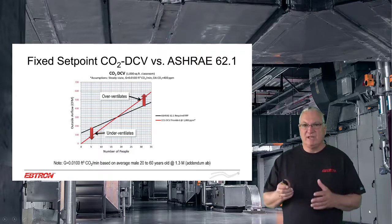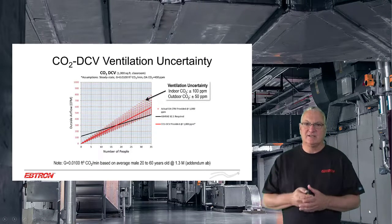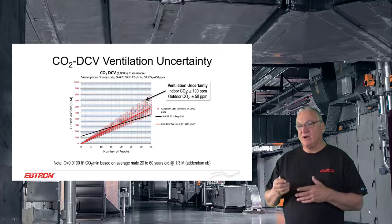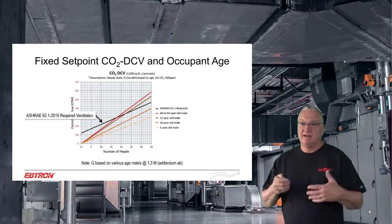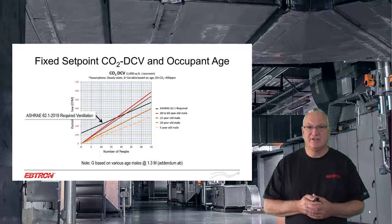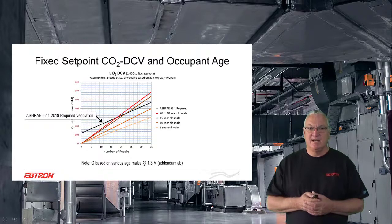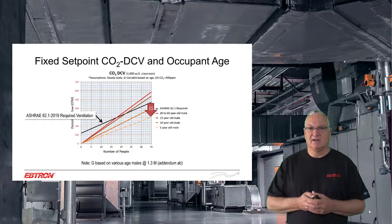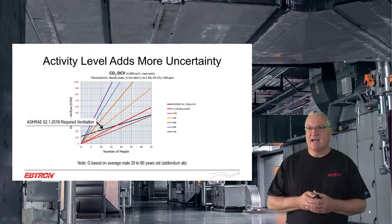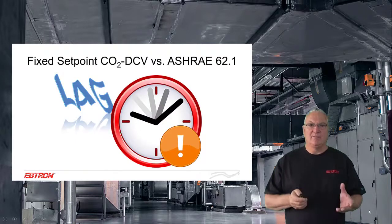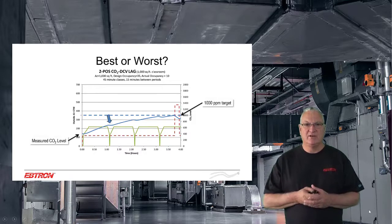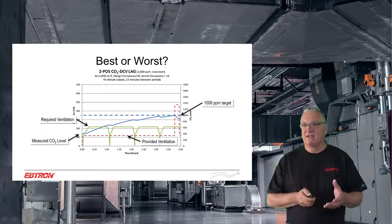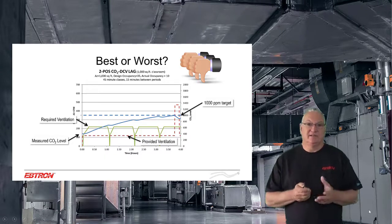We'll look at how CO2 control doesn't even meet the requirements of the ventilation standards, and how these uncertainties affect how much outdoor air you're actually bringing in. The relationship between CO2 and ventilation is dependent on CO2 production rates, which is very age-dependent. We're going to show you how some schools where you think it's safe are really under-ventilating by doing CO2 ventilation control. We'll talk about activity level and how it has to be taken into consideration. One of the big problems is lag — low CO2 levels don't necessarily mean you have proper ventilation.